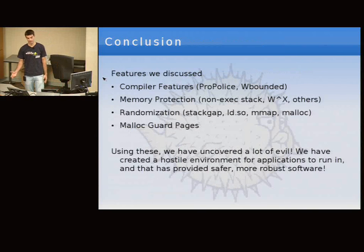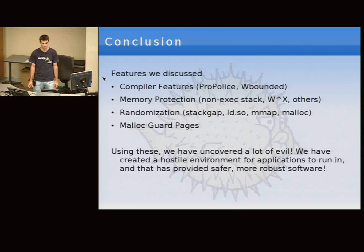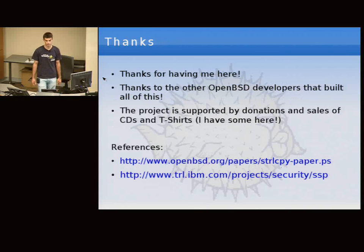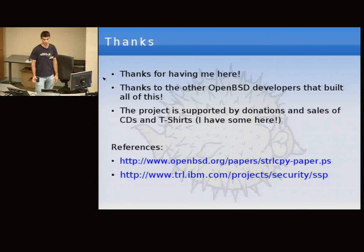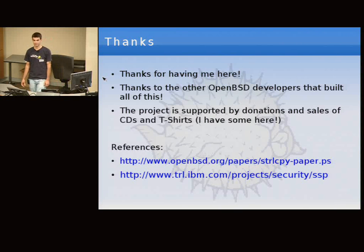In this talk, I've covered some of the compiler changes we've done and how they've helped us find bugs, memory protection such as non-executable stack and W XOR X, randomization of many parts of our system, and malloc guard pages. All of these have found a lot of bugs, especially in third-party software but also in our base system. Thanks for having me here. I'd like to thank all the OpenBSD developers — it's a completely volunteer-based project, supported by donations, CD sales, and t-shirts. I have OpenBSD 4.2 CDs here releasing November 1st, selling for $40 — $10 off the website price.